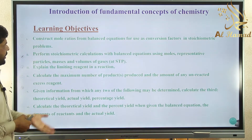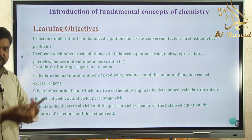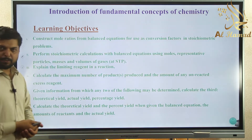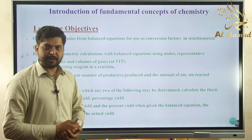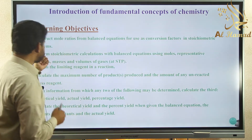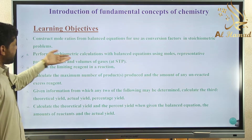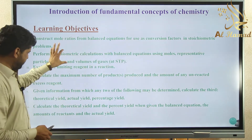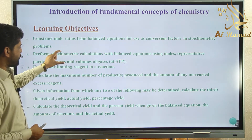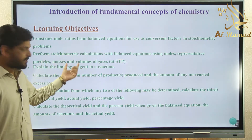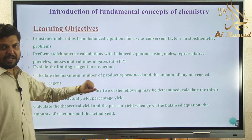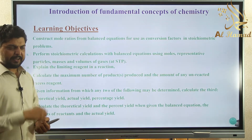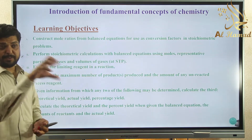The learning objectives for Chapter 1: First, construct molar ratios from balanced chemical equations for use as conversion factors in stoichiometric problems — how to solve various stoichiometric problems using this approach. Second, perform stoichiometric calculations with balanced chemical equations using molar ratios, moles, representative particles, masses, and volume of gases. Third, explain the limiting reagent in a reaction — given a reaction, find which reactant is limiting and which is in excess.